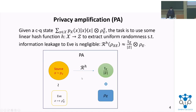For privacy amplification, given a classical quantum state shared by Alice and Eve, the task is to use some linear hash function from X to Z to extract uniform randomness such that the information linkage to Eve is negligible. Ideally, the ideal state should be the Alice uniform state tensor product with Eve's marginal state, and the protocol is shown in the figure below.